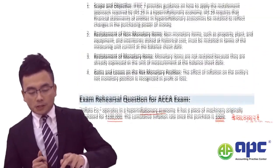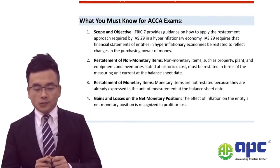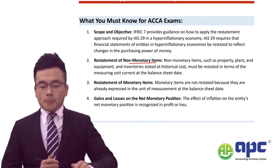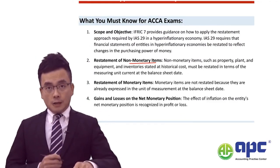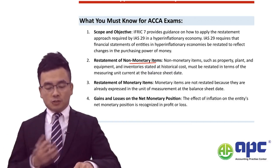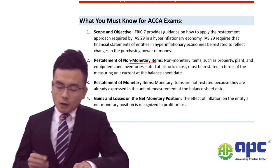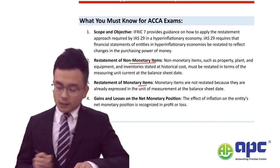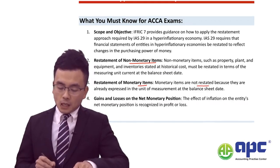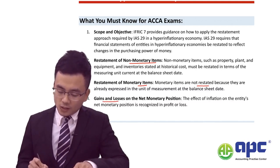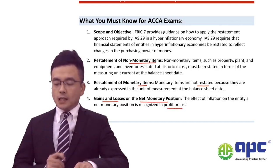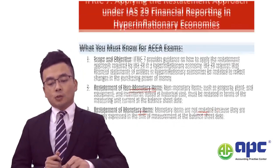To summarize: for non-monetary items, gains and losses are not put into the P&L directly — instead they go into reserves. For monetary items, these are not restated; however, the gains or losses on the net monetary position are recognized in the P&L.